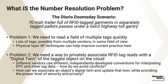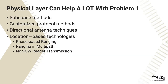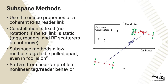Problem one: we need to read a field of multiple tags quickly if we want any hope of getting this information out. This is where physical layer RF techniques can help improve current practice. Problem two, which is the focus of many other presentations in this session, is that we need a way to privately associate RFID tag reads with a digital twin of the tagged object on the cloud, with privacy in mind, across the myriad of vendor tagging conventions in a crowded field of multiple vendor tags. So let's talk about how the physical layer can help out — it can do a lot with problem number one.